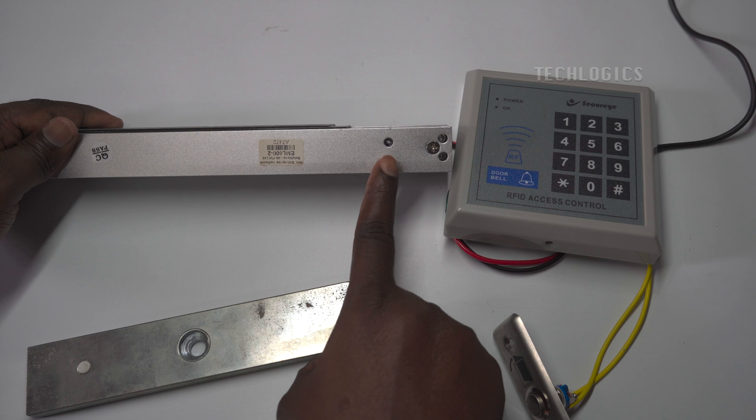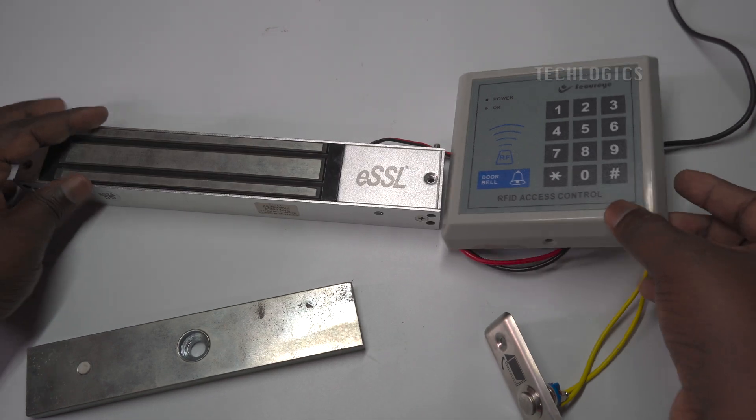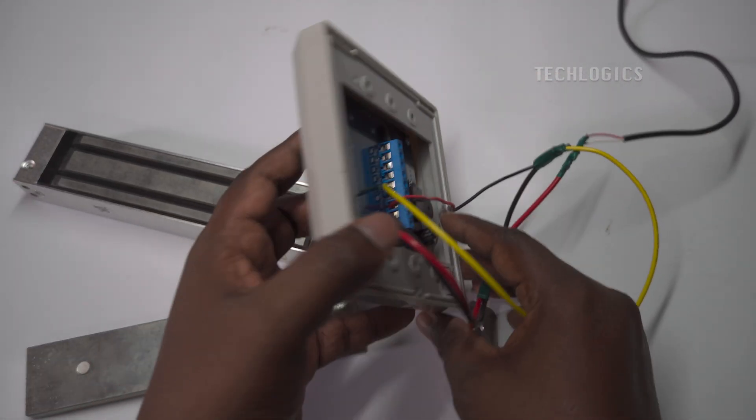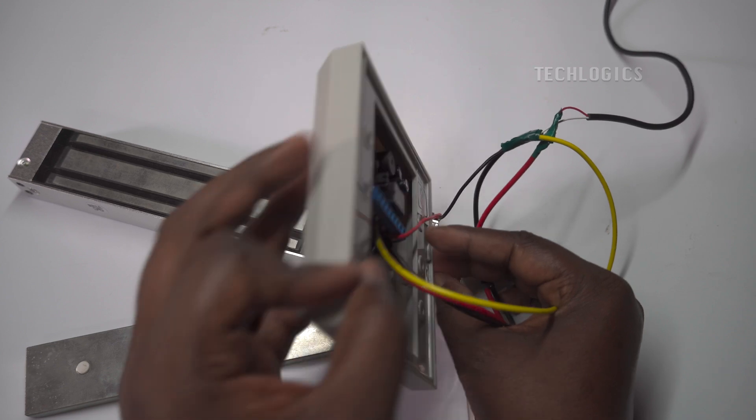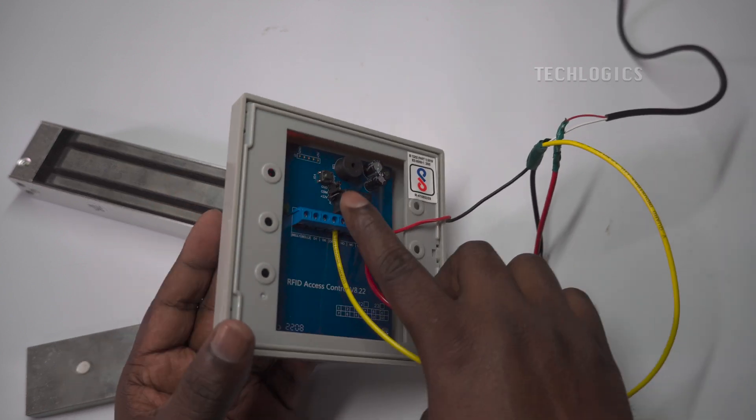Here, the access controller indicates that it is working properly if the red LED is flashing. This usually signifies that the system is powered and operational.